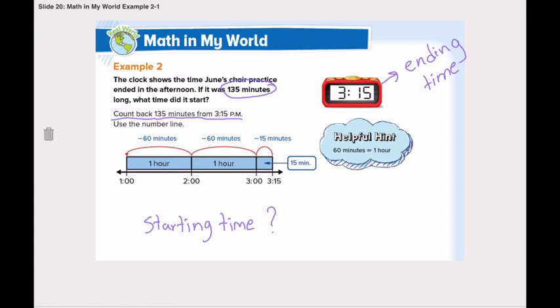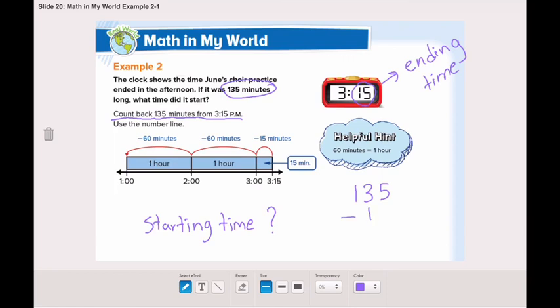Now, let's count back. We will start by removing the 15 minutes first. 135 minus 15 is, we always start with the ones: 5 minus 5 is 0, 3 minus 1 is 2, and we'll keep the 1 as it is. From 3:15 to 3, that is 15 minutes.